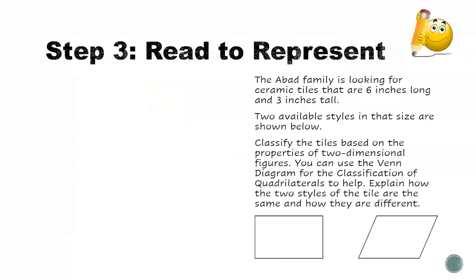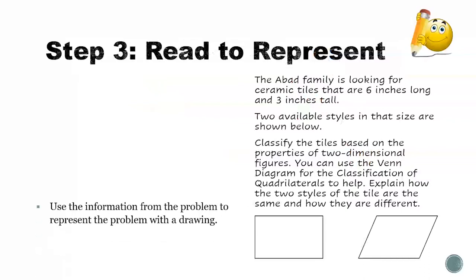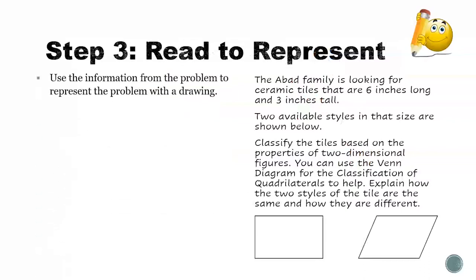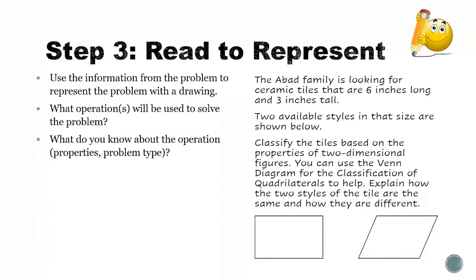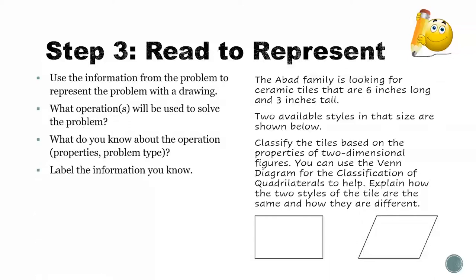Now for the third read. While we are reading, we want to think about how we use the information in the problem to represent the problem with a drawing. What operations will we use? What do we know about the information? We also need to label the information that we know.